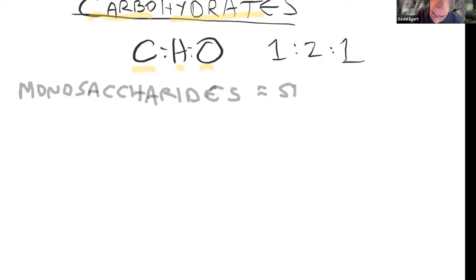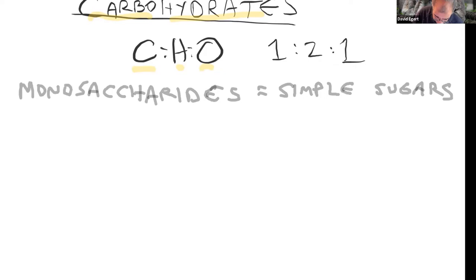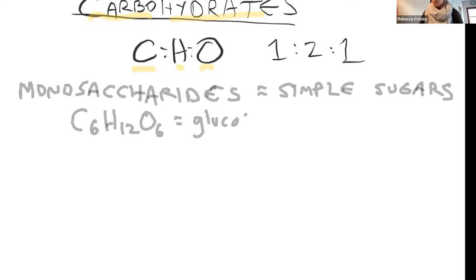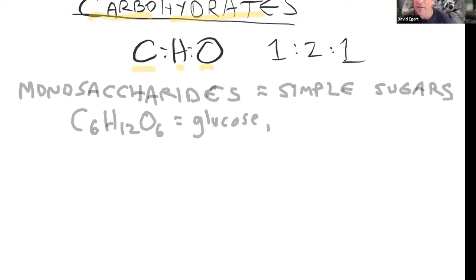The simplest carbohydrates are called monosaccharides, also called simple sugars. These include C₆H₁₂O₆, which is glucose. Depending on how you connect those atoms, the same chemical formula can be fructose or galactose — different arrangements of the same formula. This would be a hexose sugar because it has 6 carbons.